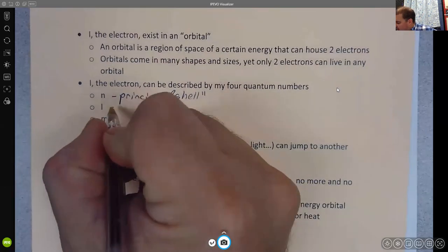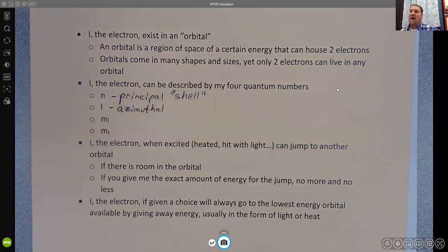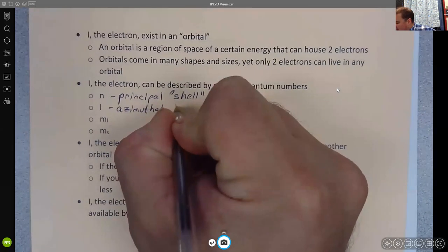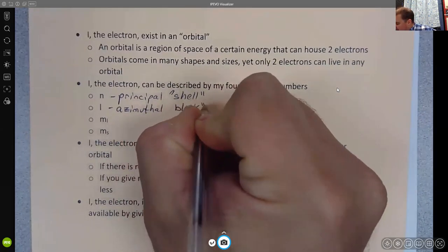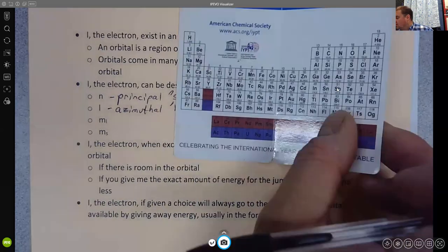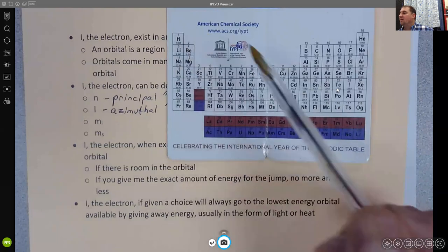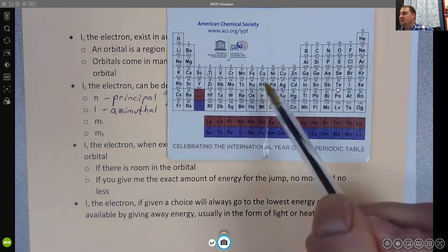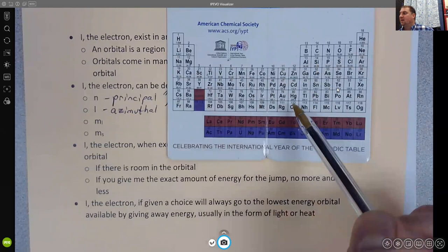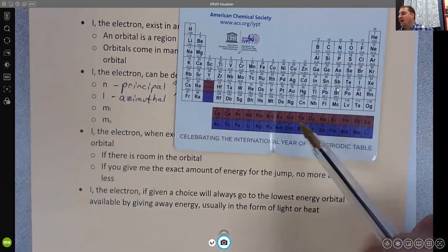The l is called the azimuthal quantum number. And this determines the type of orbital or the block. So this is S block or P block or D or F are the other blocks on the periodic table. So here is the S block. Here is the P block. Here is the D block. And these two rows out on the bottom are the F block.